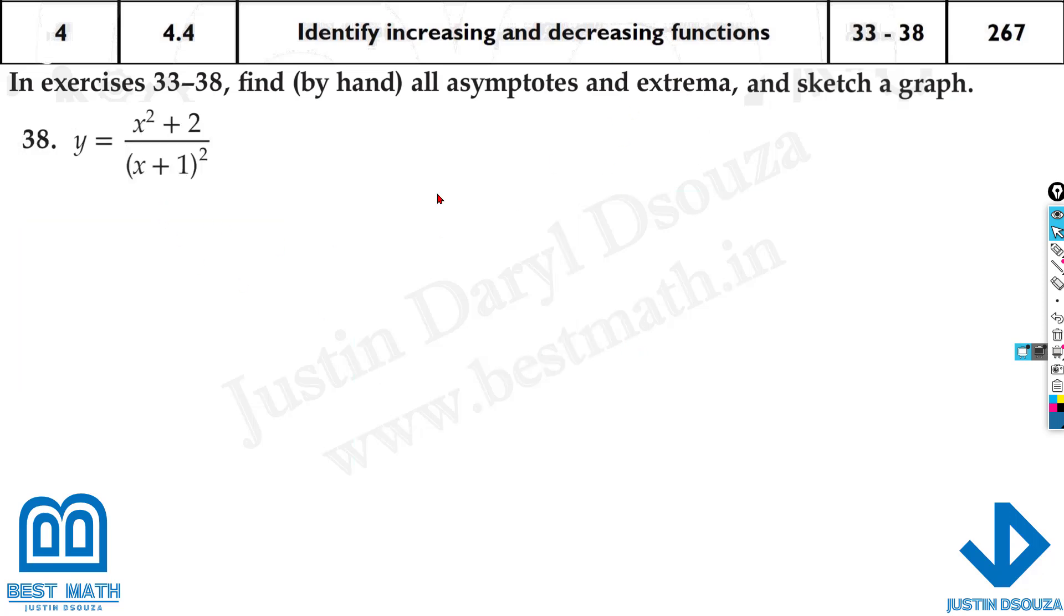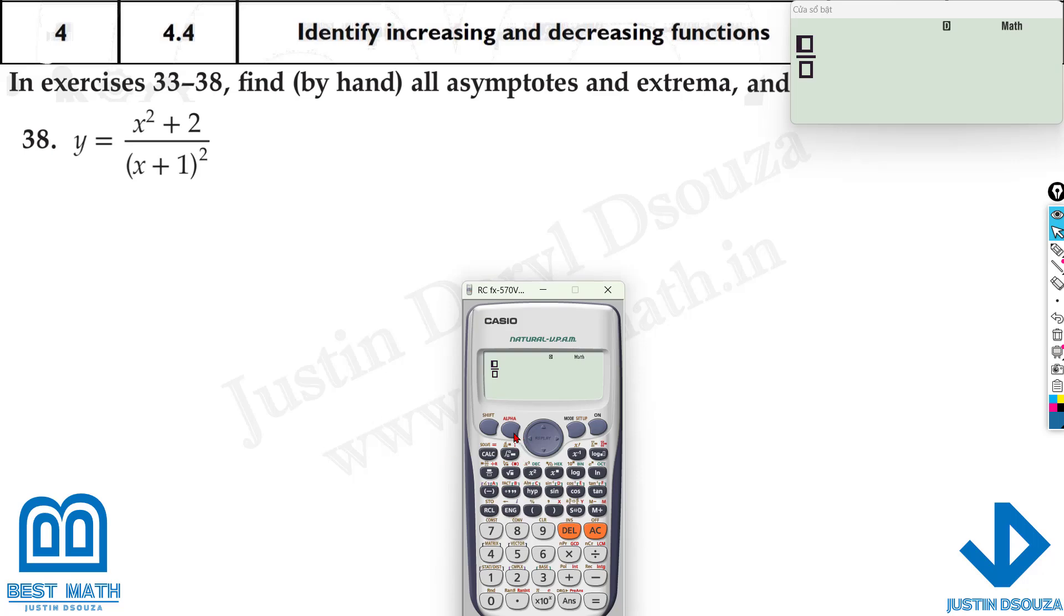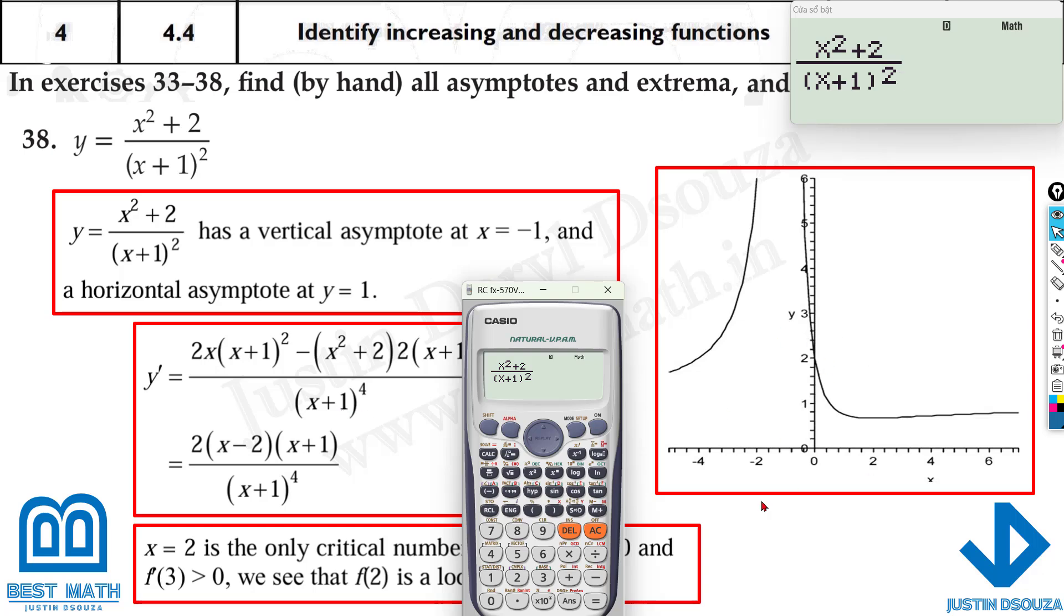This one, let's do this one. All you need to do is put it in the calculator: x squared plus 2, divided by open the brackets, x plus 1, and the denominator is only squared. Let's look into the four graphs we should have, and then calculate it at say 0.